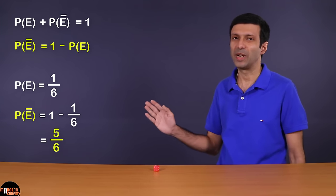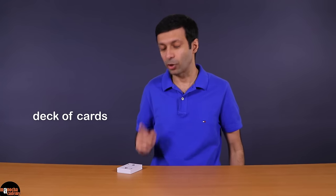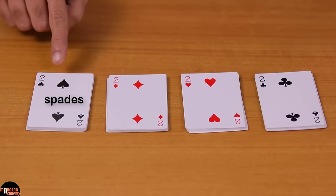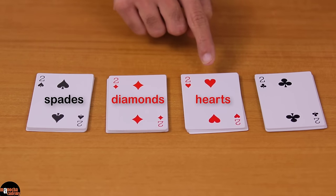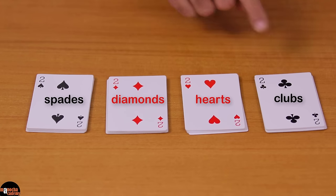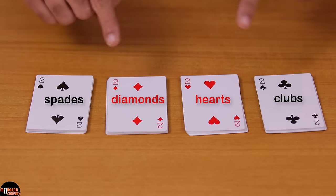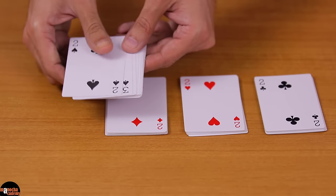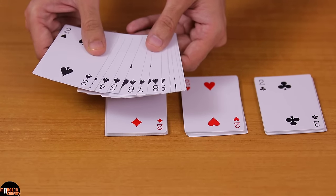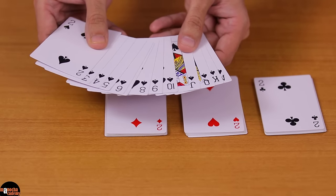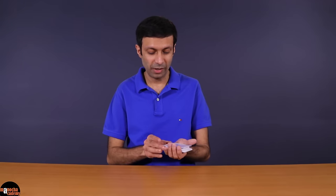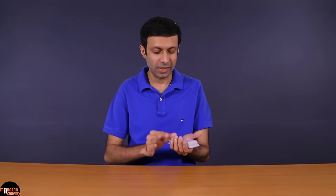Now let's take a look at a deck of cards. A deck contains a total of 52 cards and there are four suits of 13 cards each: spades, diamonds, hearts, and clubs. Spades and clubs are the black cards, and diamonds and hearts are the red cards. Each suit has number cards two through ten, and then jack, queen, king, and the ace card.